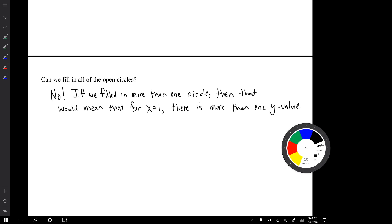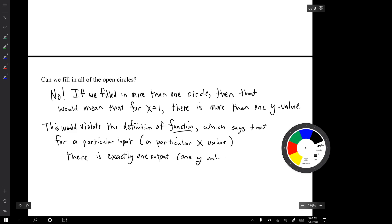Well, the key to that is the definition of function. The definition of function is for a given input, there's exactly one output. And in terms of the graph, we would say that the graph would violate the vertical line test.